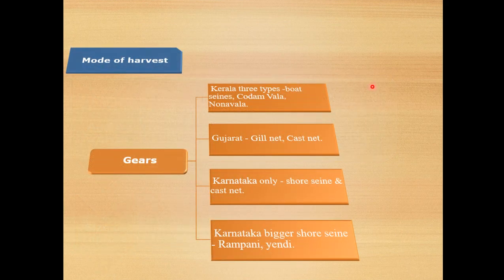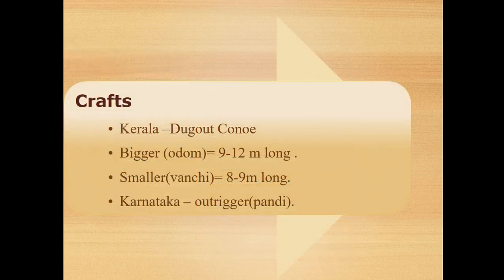About craft and gear used for capture: in Kerala, there are three types of nets — Spiny, Valya, and Nonvalya. In Gujarat, gillnet and castnet are used. In Karnataka, shore seine and castnet are used, along with the bigger shore seine called Rampani. Crafts used include the dugout canoe in Kerala, called Odam (9–12 m long) and Vanchi (8–9 m long). In Karnataka, the craft is called Pandi. Other craft names include Zalapan, Zahaslima, and Botmantu.